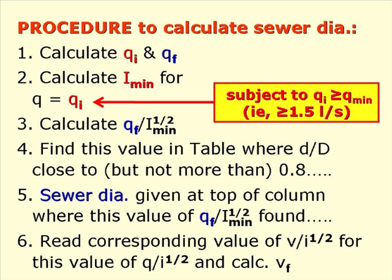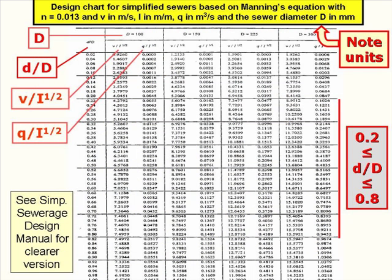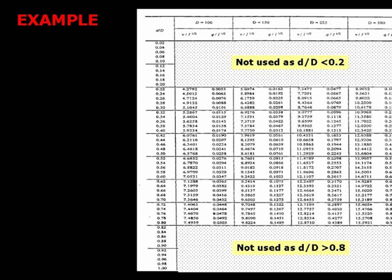The design chart for simplified sewers is based on Manning's equation with N equals 0.013, V in metres per second, I in metres per metre, Q in cubic metres per second, and sewer diameter in millimetres. There are five main columns: the first gives d/D, and then four columns for sewer diameters of 100, 150, 225, and 300 millimetres. Each diameter column has two subcolumns: V over I to the power 1.5, and Q over I to the power 1.5. The range of d/D used is between 0.2 and 0.8.